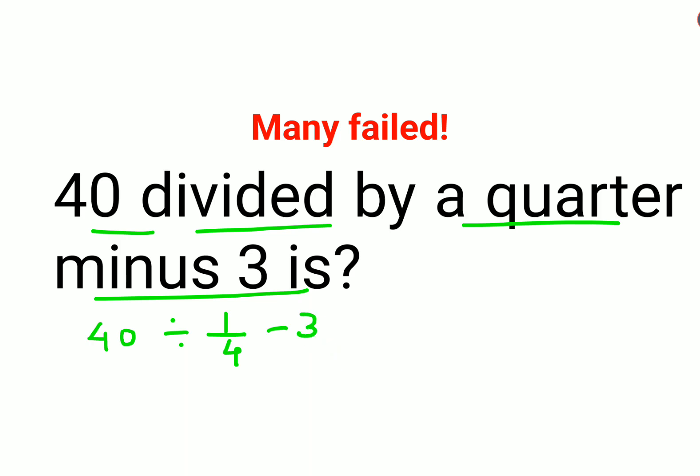Now, a lot of people thought that the answer was 7, but that is incorrect. Why? Because they thought 40 divided by quarter is basically 40 divided by 4. So 40 divided by 4 is 10, 10 minus 3 gets you 7, which is incorrect.